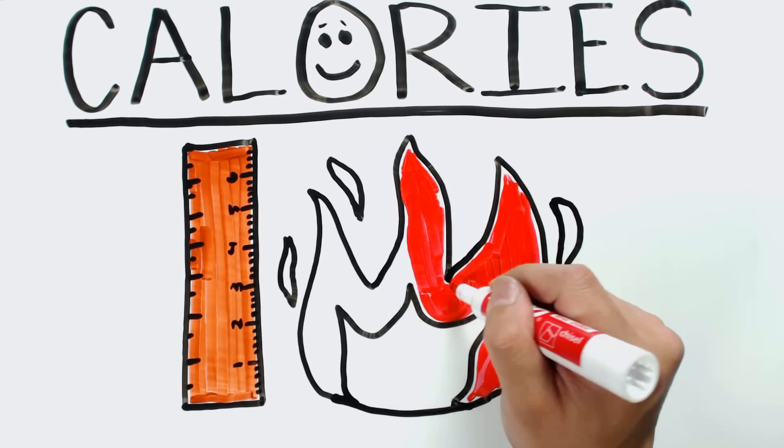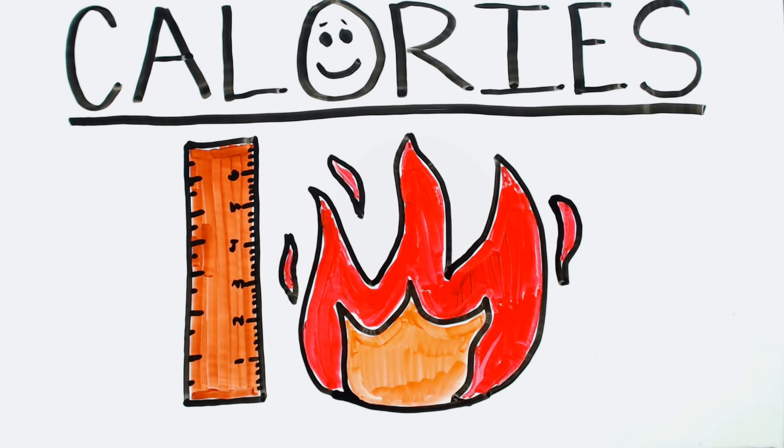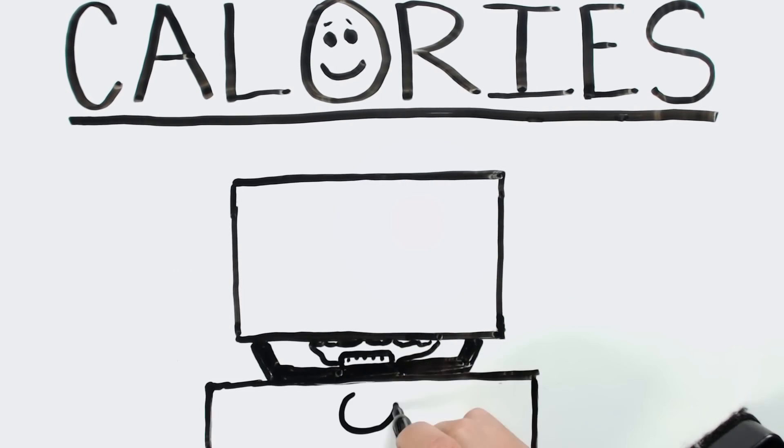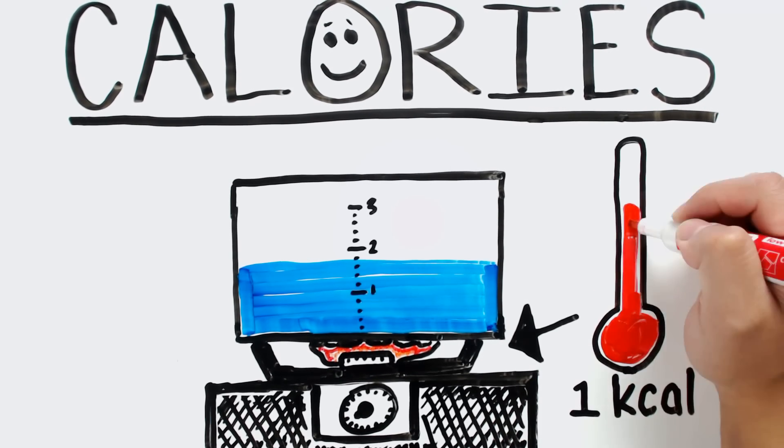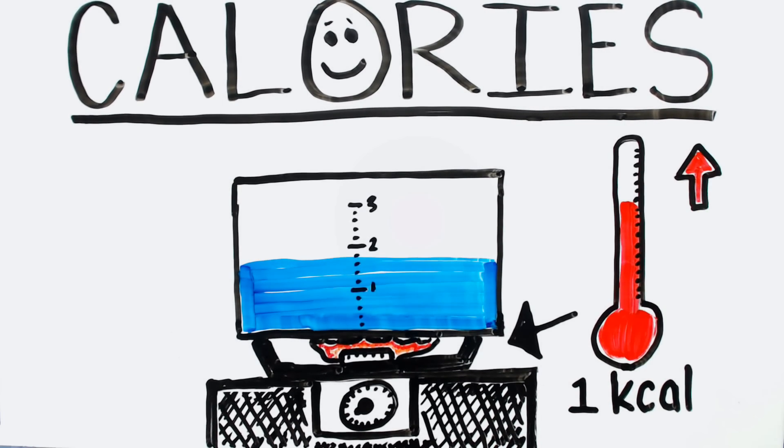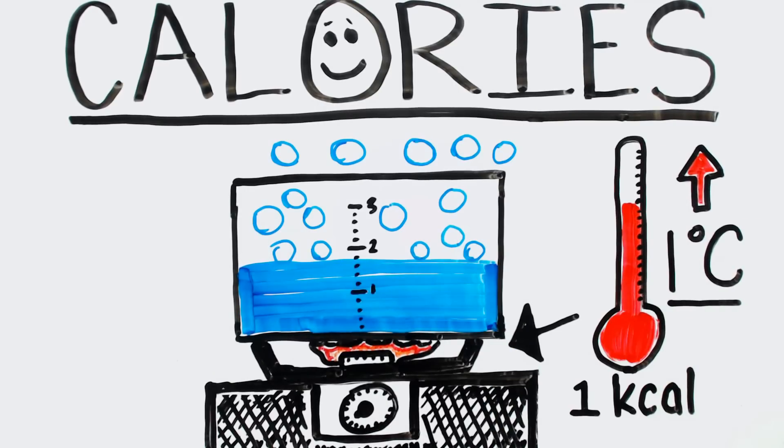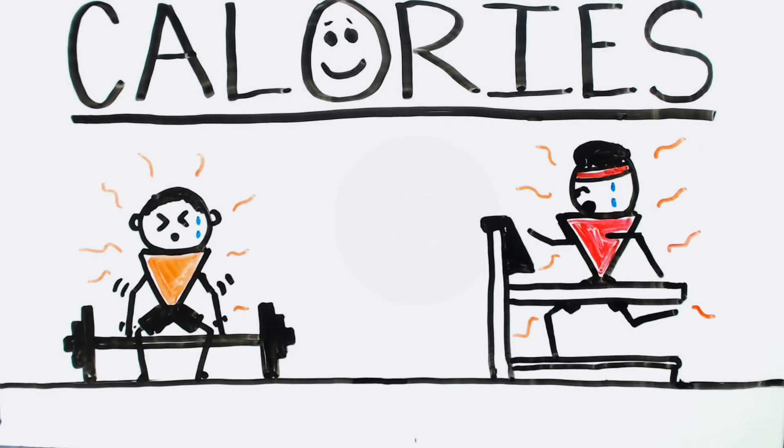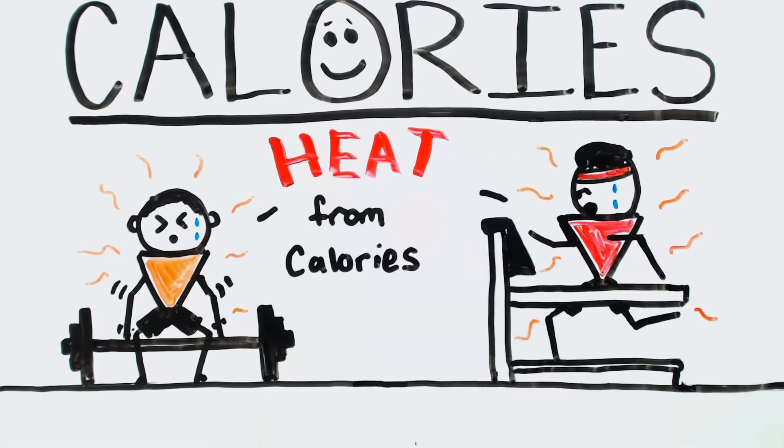Scientifically, calories are used as a measurement of energy or heat. It takes one calorie of energy in order to raise the temperature of one kilogram of water by one degree Celsius. When people say they are burning calories from exercise, essentially the body is releasing heat created by the energy from calories.